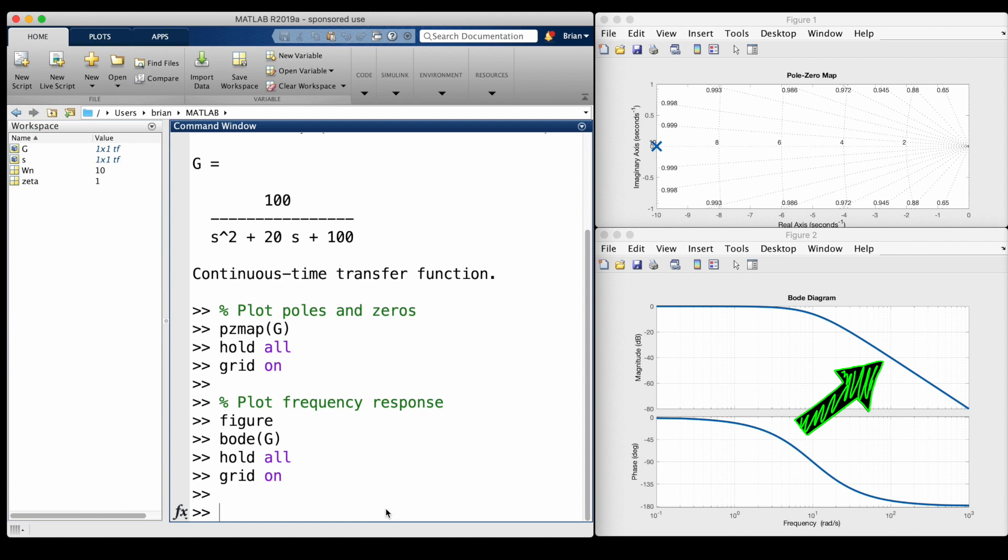This minus 40 is because we have two more poles than zeros, and for every extra pole, the magnitude drops by an additional negative 20 dB per decade.